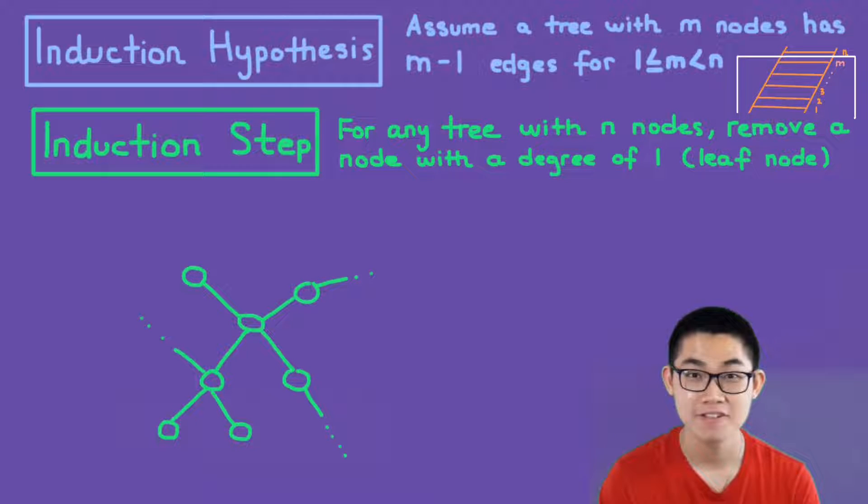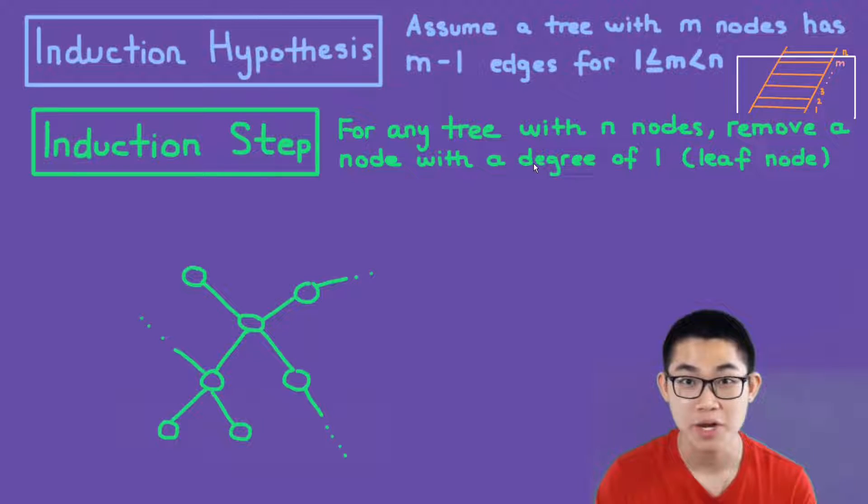So let's say we have a tree, just a random tree with n nodes. We remove a node with a degree of 1 or the leaf node. So for example, let's say we have this tree. The leaf node would be this one. It does not connect to any more nodes.